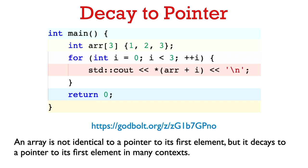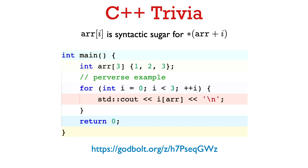There's a close relationship between arrays and pointers. An array is not identical to a pointer to its first element, but in many contexts an array does decay to a pointer to its first element. Looking at this code snippet, you see that arr is actually behaving exactly like a pointer would — if I dereference arr + i, I'm getting the ith element of the array. Another context in which you'll see this is when you pass an array to a function — it will also decay to a pointer to its first element.